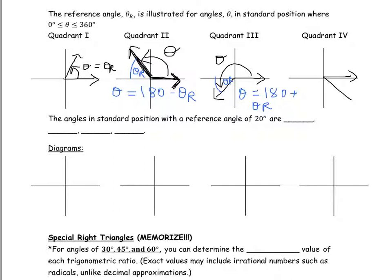In quadrant four, the reference angle is from the terminal arm to the closest x-axis. The connection between the angle in standard position and the reference angle in quadrant four is that theta equals 360 degrees subtract the reference angle. If you're given your reference angle, you can find the angles in standard position with that given reference angle.